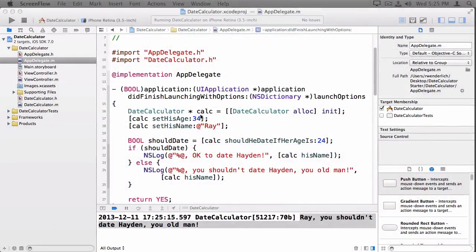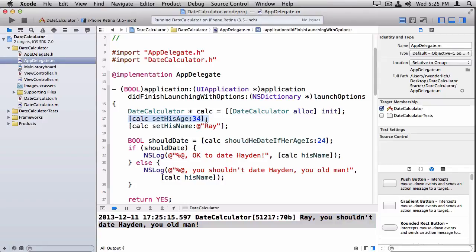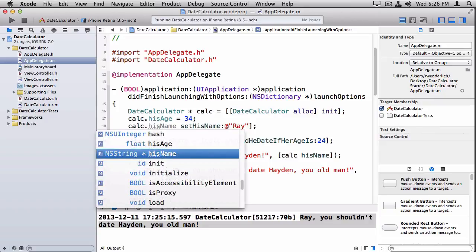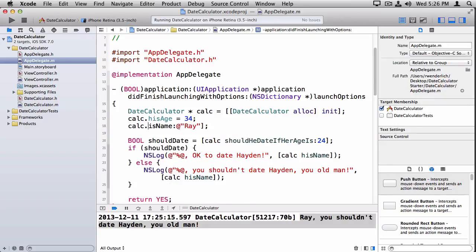Okay, let me show you one last thing. Let's convert the code we wrote earlier to use dot notation instead of the long way of writing things. So, instead of calling calc set his age, that's a property so I can use dot notation. So I will delete that and just put calc dot his age equals 34. To me that just reads a little bit better. The compiler, they're exactly equivalent. It's just which you prefer to look at better. And similarly, I can change set his name to calc dot his name equals Ray.